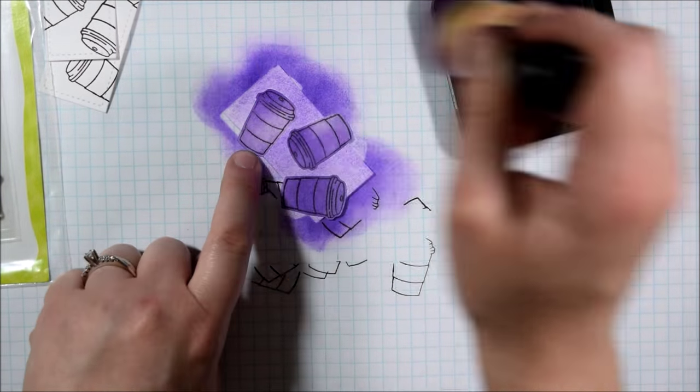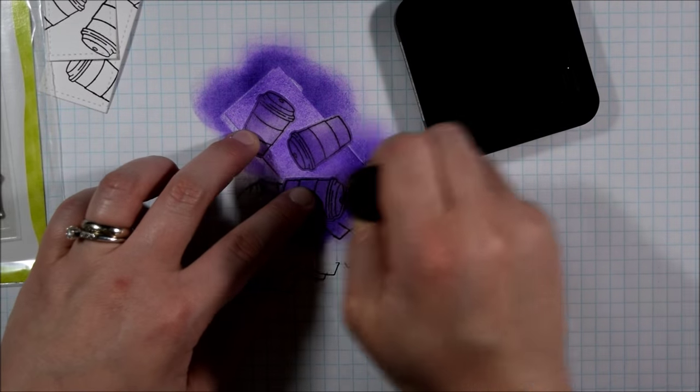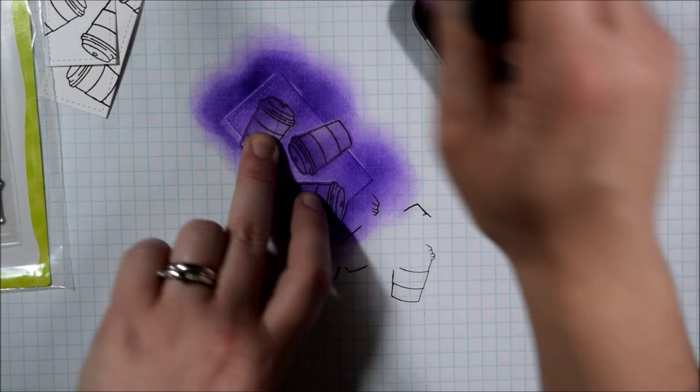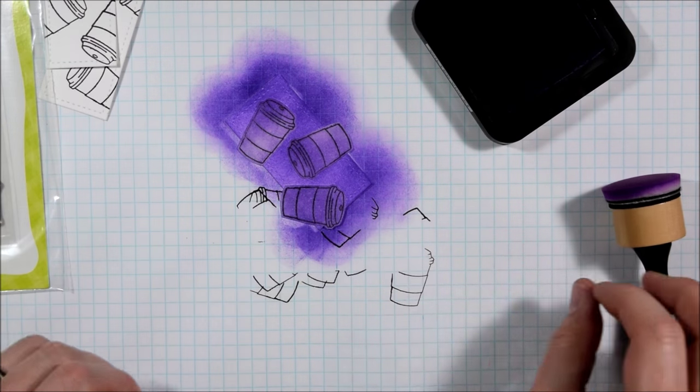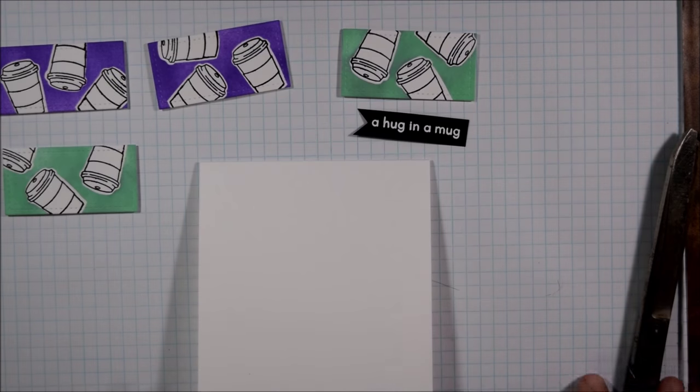You could just cut out a bunch of white coffee cups and layer them on. But I like this effect and I think that most people probably have those inks to get the different colors. You could also just color around the coffee cups with markers and leave that space white for a similar look.